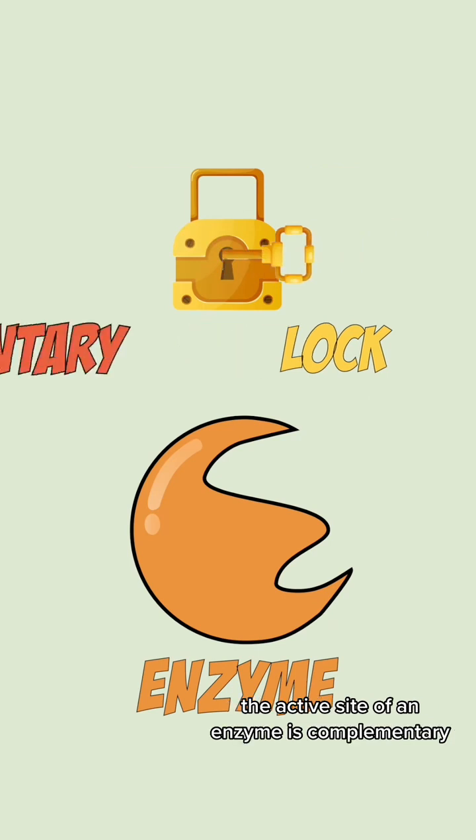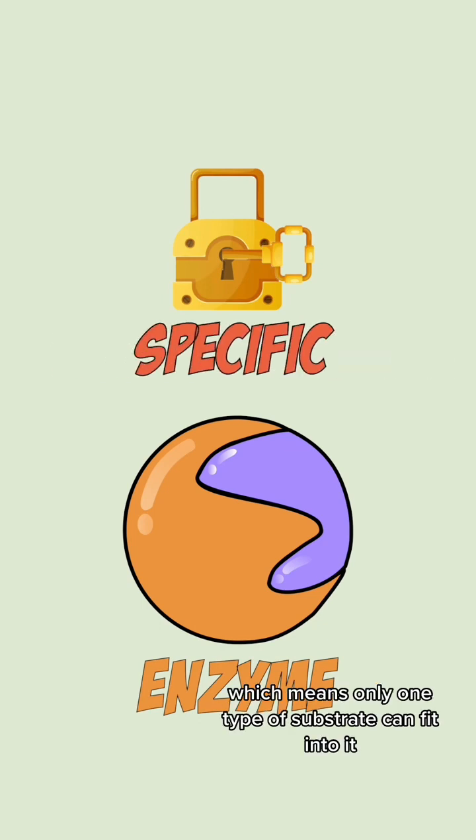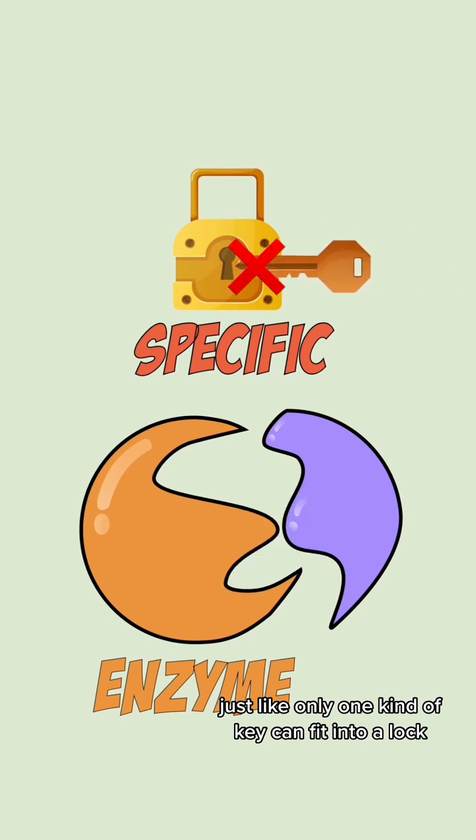The active site of an enzyme is complementary which means it fits the substrate into it perfectly. It's also specific which means only one type of substrate can fit into it just like only one kind of key can fit into a lock.